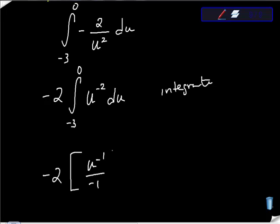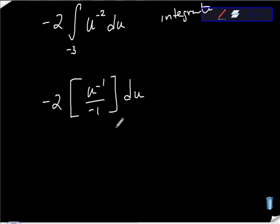This gives me -2 times the quantity, which would be u^(-1) over -1. I should give my evaluative thing here, so I'm going to evaluate from here to here. This negative 1 and this negative 2 go to just 2, don't they?